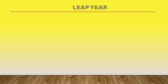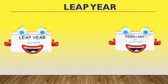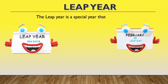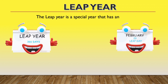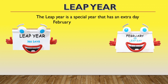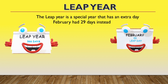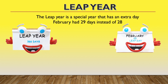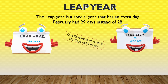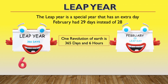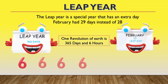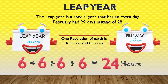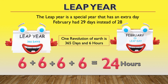What is Leap Year? The leap year is a special year — it has an extra day. February has 29 days instead of 28 days. Since one revolution of the Earth is 365 days and 6 hours, the extra 6 hours accumulate, and we add them 4 times to create a leap day.